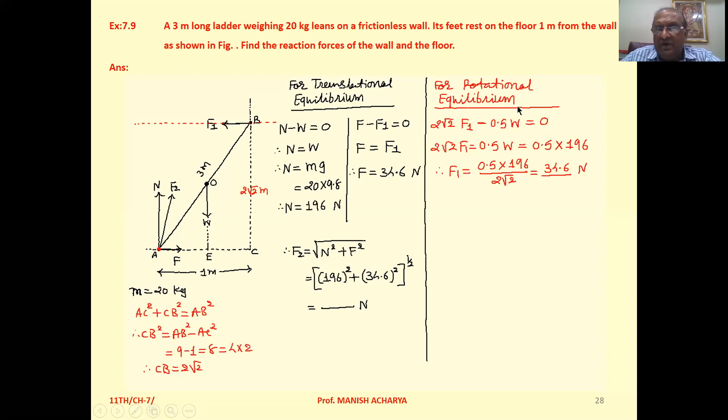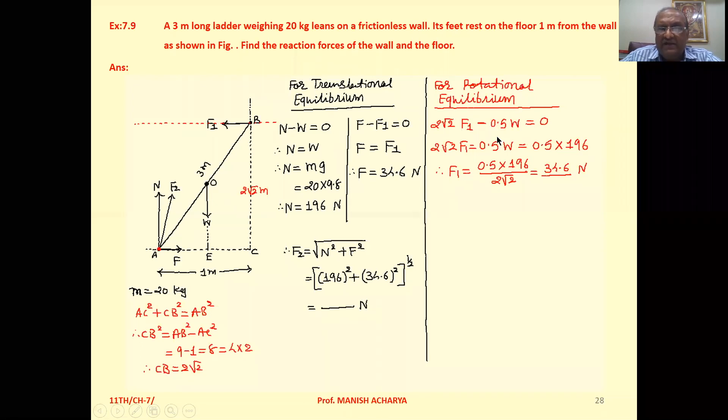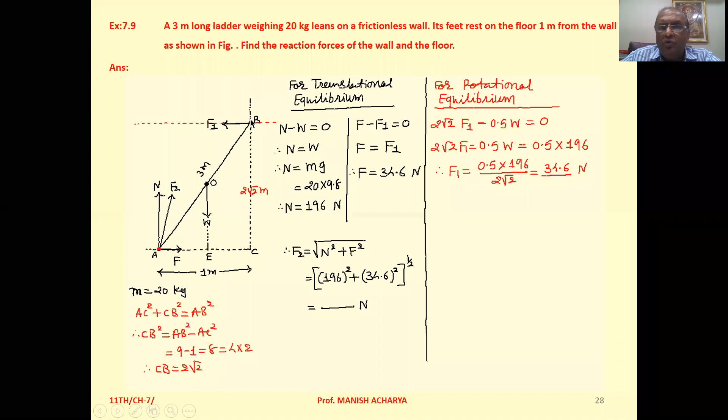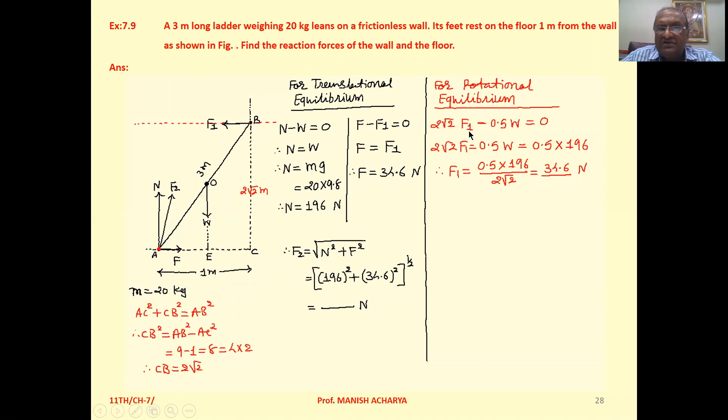Then take the rotational equilibrium. For rotational equilibrium, we can write the force F1 at a perpendicular distance equal to 2 root 2. So we can write the perpendicular distance into force F1. Then another force, this W, is at the perpendicular distance 0.5 because this is the midpoint of the ladder. If you draw a normal on AC, that normal will be at point E. This portion is 1 meter, so AE equals 0.5.